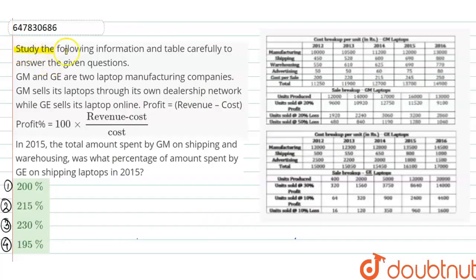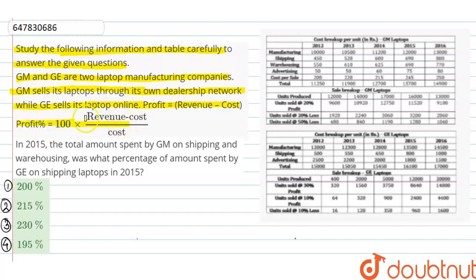Hello everyone. The question is: study the following information and table carefully to answer the given question. GM and GE are two laptop manufacturing companies. GM sells its laptops through its own dealership network, while GE sells its laptops online. Profit equals revenue minus cost; Profit% equals 100 into (revenue minus cost) divided by cost.